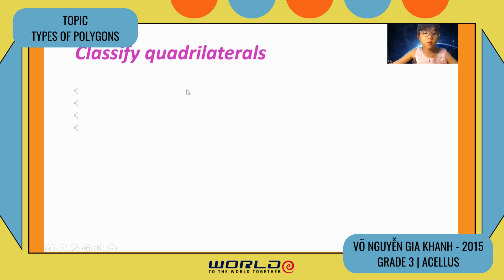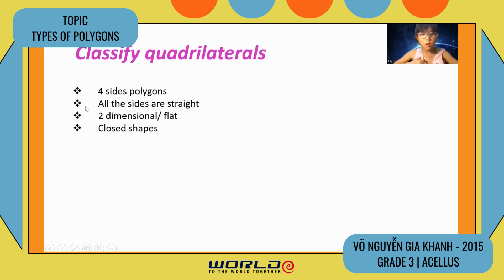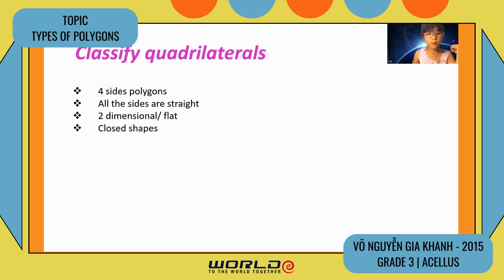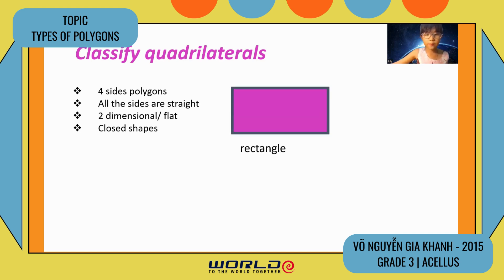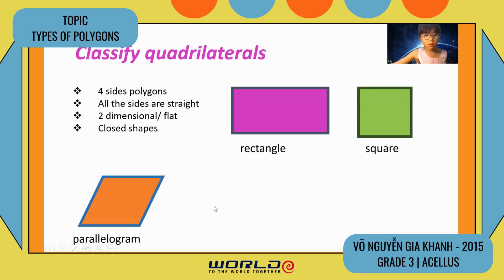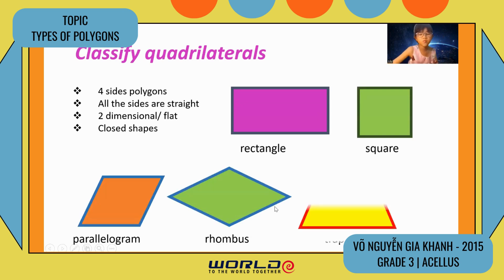Classifying quadrilaterals. What are quadrilaterals? They are four-sided polygons where all the sides are straight — they do not have curves. They are two-dimensional shapes, which we usually call 2D. Some examples are rectangle, parallelograms, rhombus, and trapezoids. All of these are quadrilaterals.